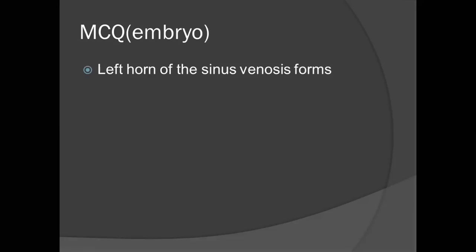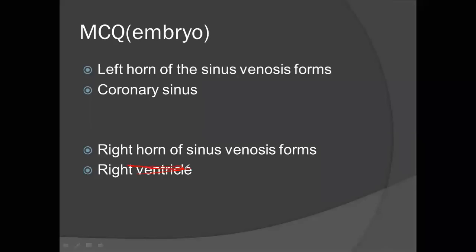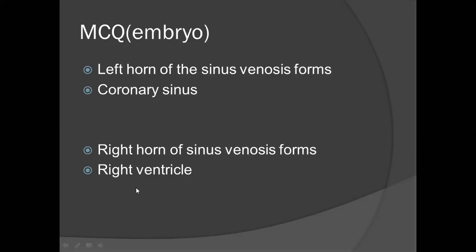The left horn of the sinus venosus forms — this embryo MCQ answer is the coronary sinus. What is the other possibility? They can ask about the right horn of the sinus venosus — it forms the right atrium. So if it is the left side, it is the coronary sinus; if it is the right side, it is the right atrium. That is the reasoning.